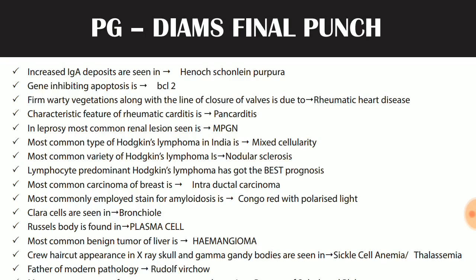Lymphocyte predominant Hodgkin's lymphoma has the best prognosis. Most common carcinoma of breast is intraductal carcinoma. The commonly employed stain for amyloidosis is Congo red with polarized light. Clara cells are seen in bronchioles. Russell body is found in plasma cells. Most common benign tumor of liver is hemangioma.